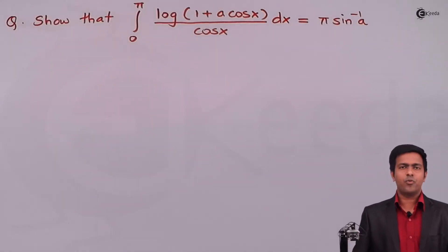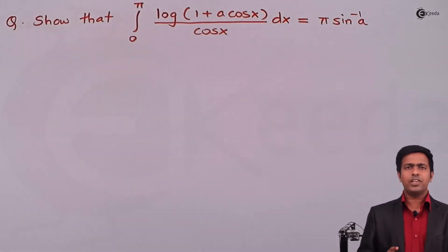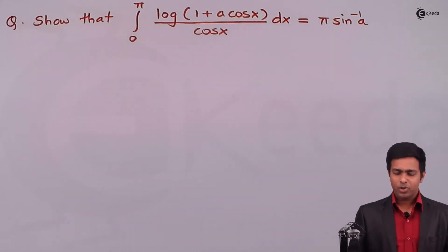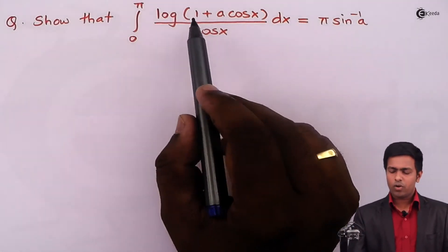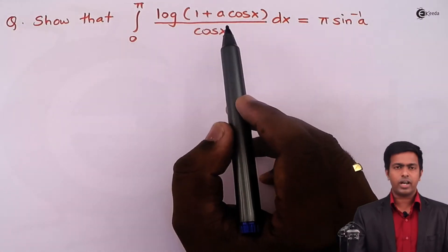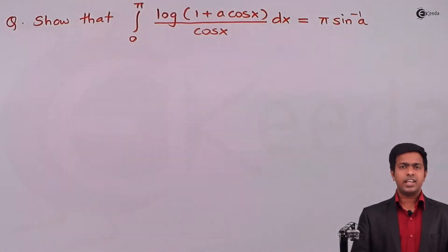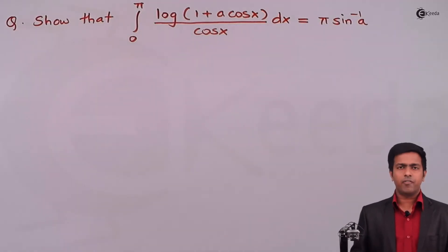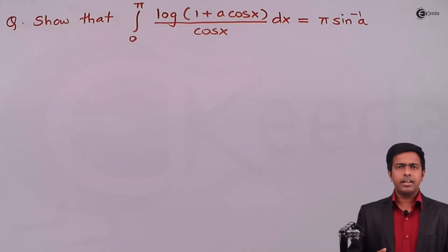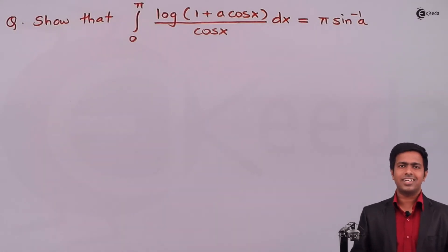Hello students, in this video we are going to learn the concept of differentiation under integral sign and solve a numerical based on the same concept. The question asks us to show that the integration from 0 to π of log(1 + α·cos x)/cos x dx equals π·sin⁻¹(a). The way to identify this as a DUIS problem is simple: whenever we get an integral that has a variable with some parameter, it belongs to differentiation under integral sign.